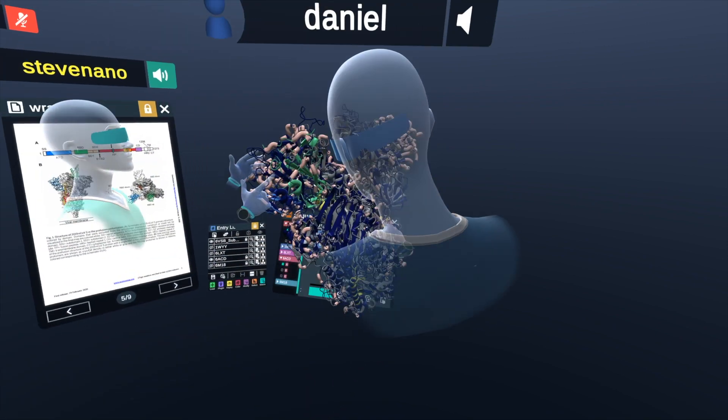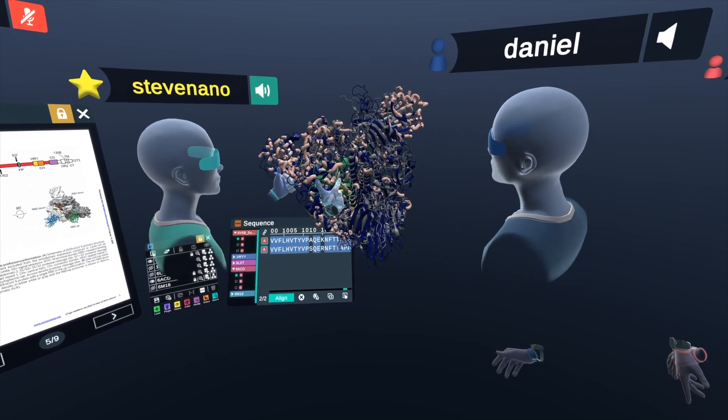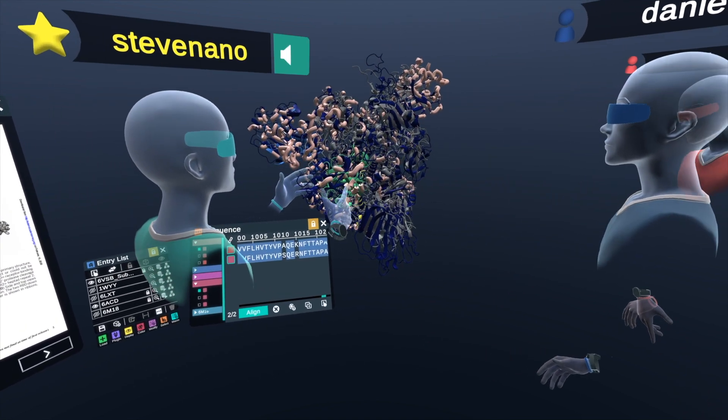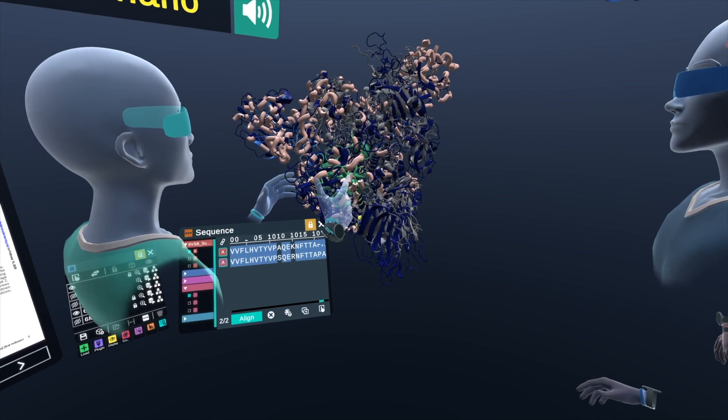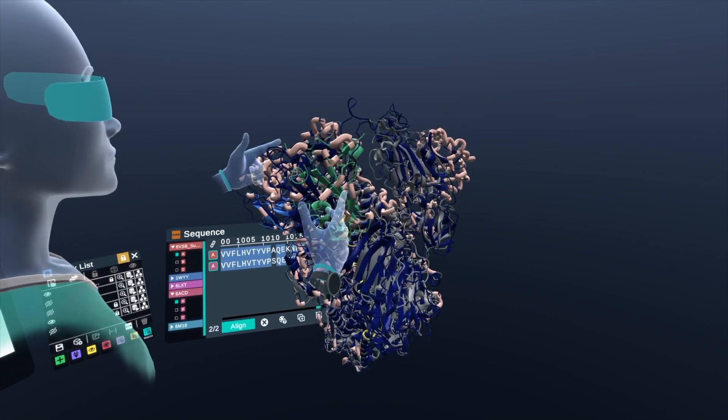And you'll notice that there's some areas here where we show all the highlighted differences, and there's a lot of differences being highlighted on the receptor binding domain in the pink.